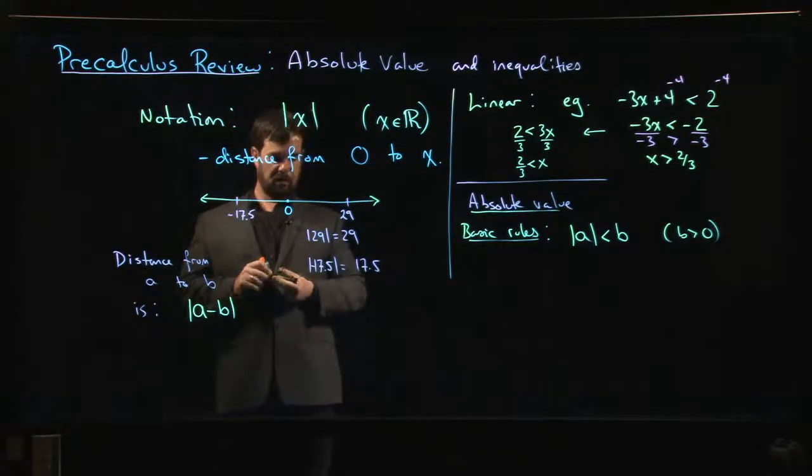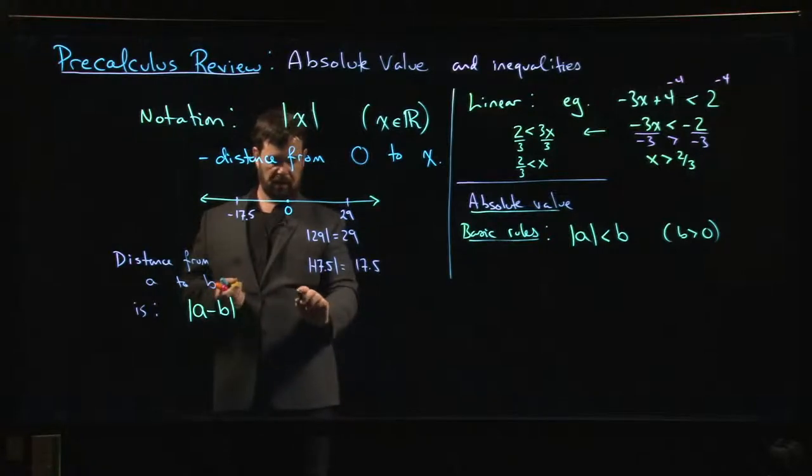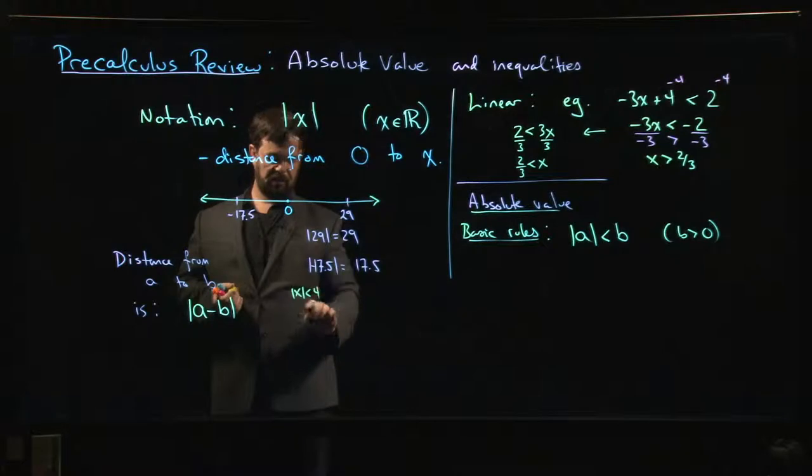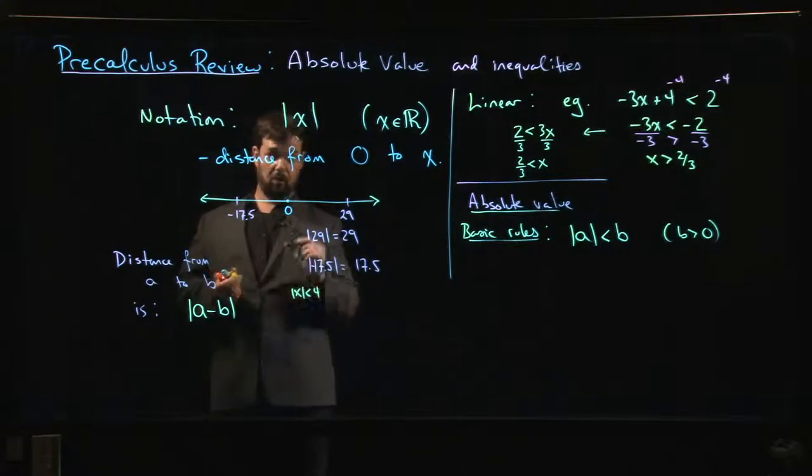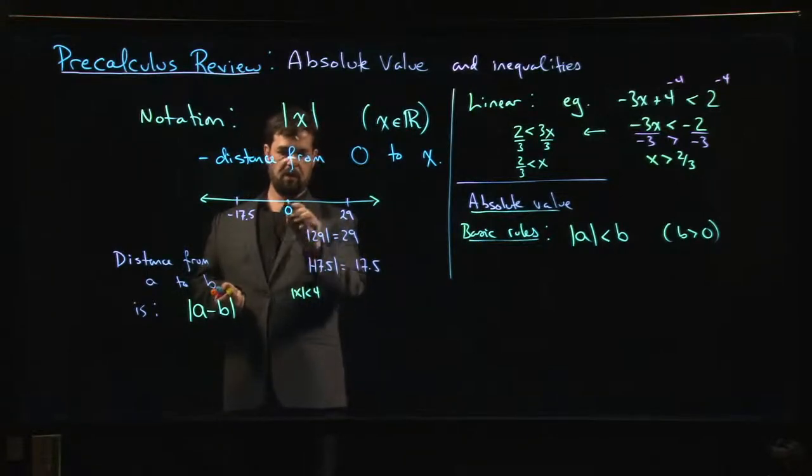So if I say something like the absolute value of x is less than, let's say, 4, what am I telling you? Well, I'm telling you that x is, the distance from 0 to x is no bigger than 4. And that means that all the numbers, 1, 2, 3, 4 units, it's not to scale. So all the numbers from here to there, but not including 4, those are included. Those all have a distance from 0 that's less than 4.